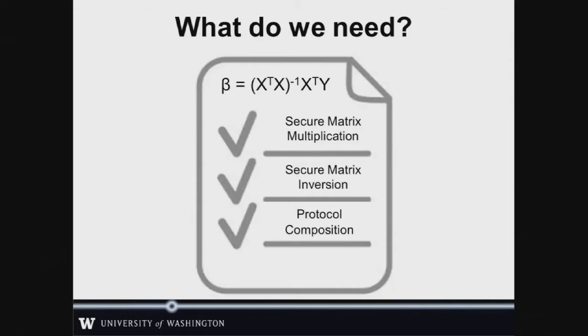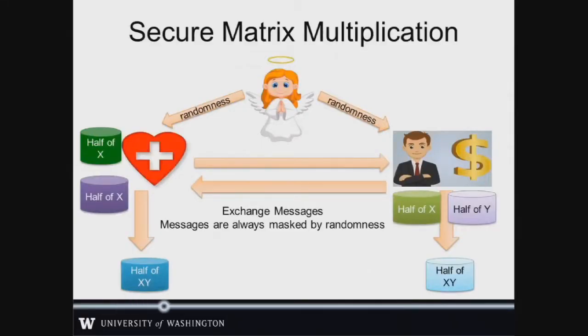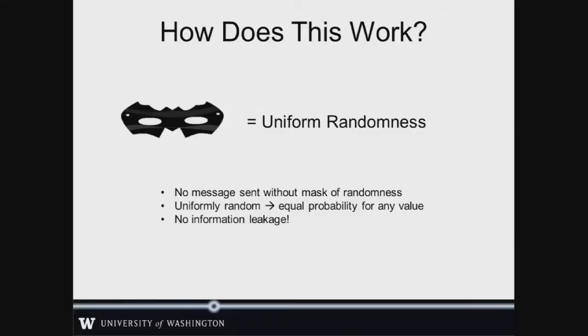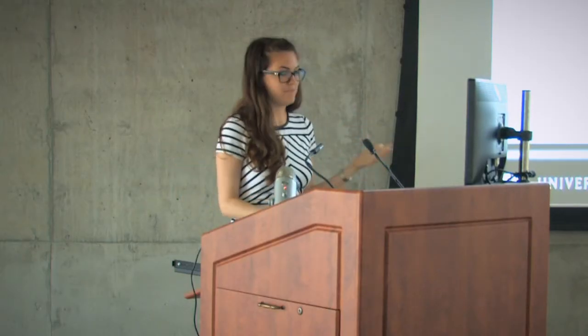So what do we need to get there? We need a secure matrix multiplication protocol, an inversion protocol, and a way to put them together to get our model at the end that ensures security throughout the whole process. Starting with multiplication: our trusted initializer gives each party some randomness, the parties exchange messages that are always masked by some of this randomness, and the mask provides our security. The messages leave each party with a portion of the result they're looking for. How does randomness provide security? The key is having uniformly random values — every value has the same chance of being our mask, so anyone seeing the messages can learn nothing, since any value has an equal shot of being in that message.